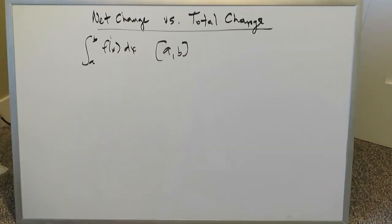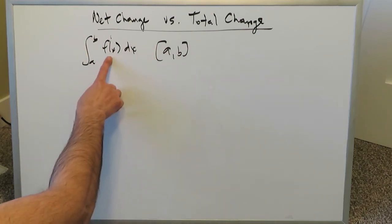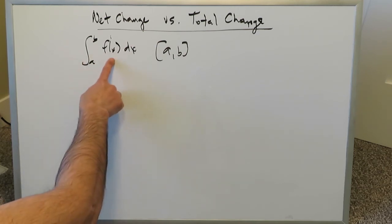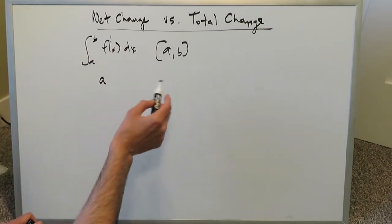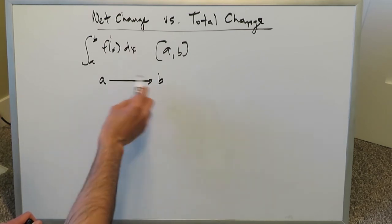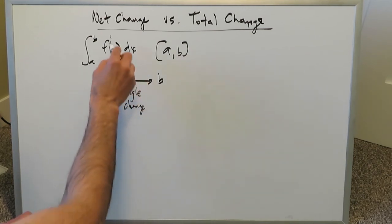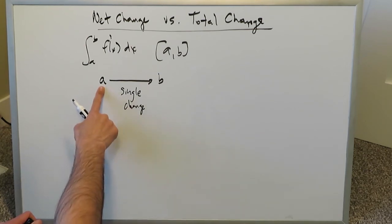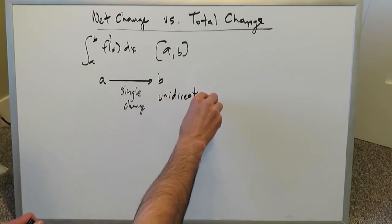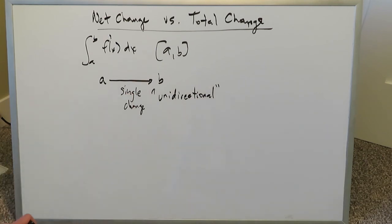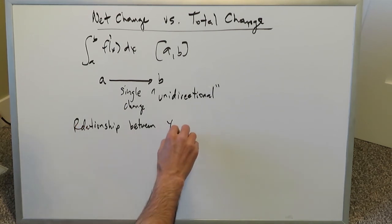A few words of caution: when applying the net change theorem — a definite integral of a derivative from lower limit a to upper limit b — do not wrongfully assume that only a single change is occurring from a to b in a uni-directional manner. That is not always the case. A lot can be happening between a and b, and the key is the relationship between your interval and your curve.